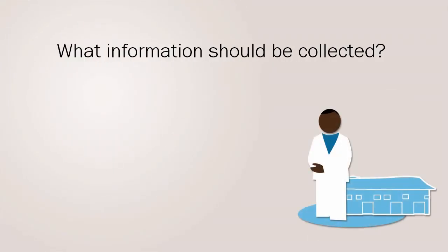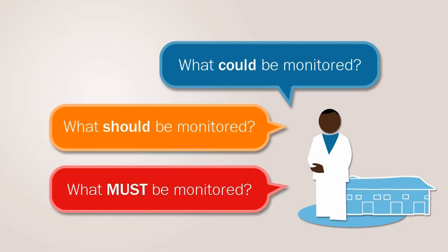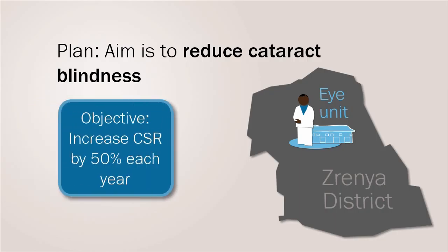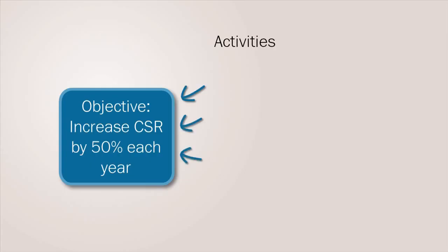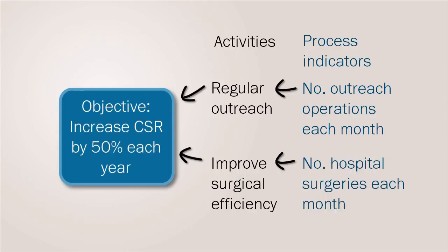In any program or plan, it is important to decide what information should be collected and when. Planners must decide on what could be monitored, what should be monitored, and what must be monitored. For example, Sirenia District Eye Unit develops a plan which aims to reduce cataract blindness in the district. One of the plan's objectives is to increase cataract surgical rate by 50% each year. The unit decides to carry out several activities, two of which are to establish regular outreach and to improve surgical efficiency at the hospital. To check that these two activities actually happen and to manage their progress, managers regularly collect data on several process indicators, such as the number of outreach operations and hospital surgeries carried out each month.